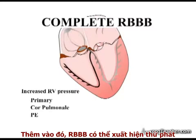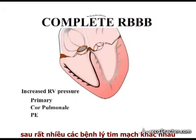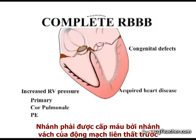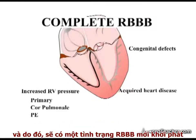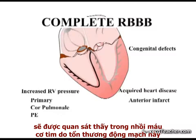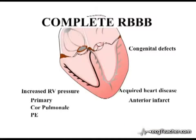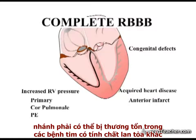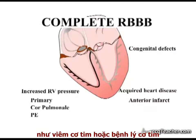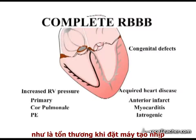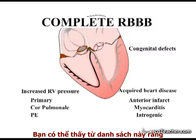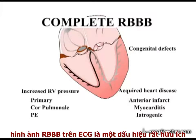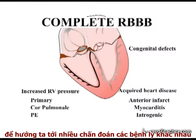Right bundle branch block may also occur secondary to a wide variety of heart diseases, either congenital or acquired. The right bundle branch is supplied by septal branches of the left anterior descending artery, and so new onset right bundle branch block may be observed in myocardial infarction secondary to obstruction of this artery. The right bundle branch may also be affected in diffuse cardiac diseases such as myocarditis or cardiomyopathy. Iatrogenic causes are also recognised, such as damage during pacemaker placement or right heart catheterisation. This list, which is by no means exhaustive, shows that right bundle branch block on the ECG can be a useful pointer towards a diverse range of significant diseases.